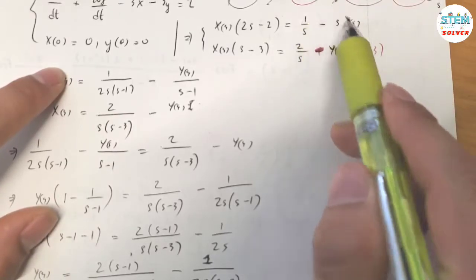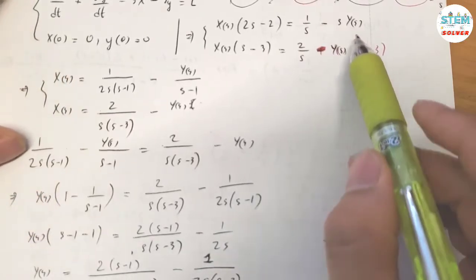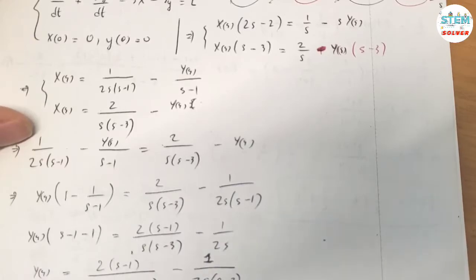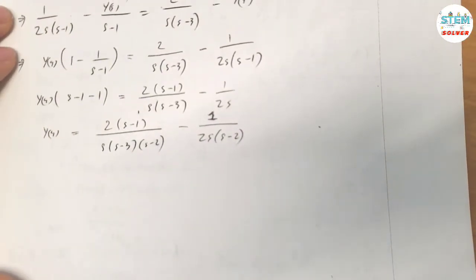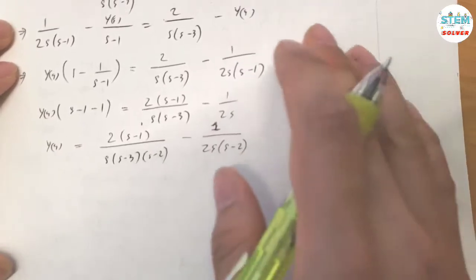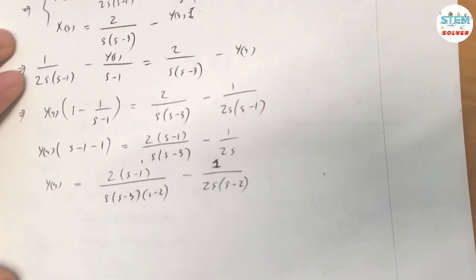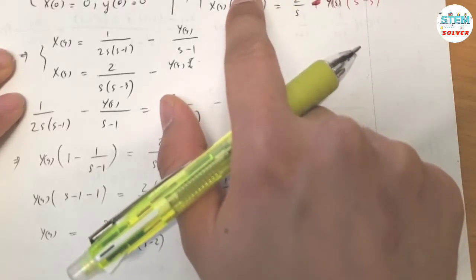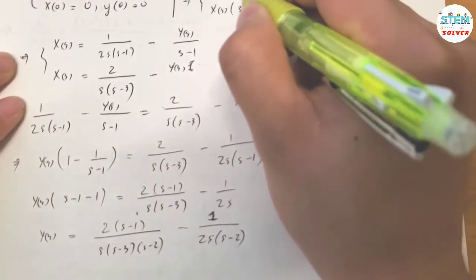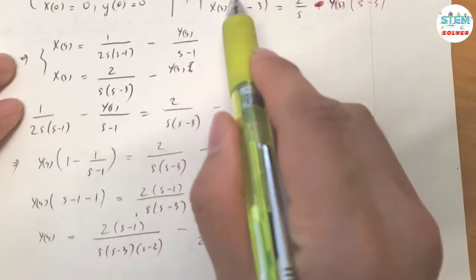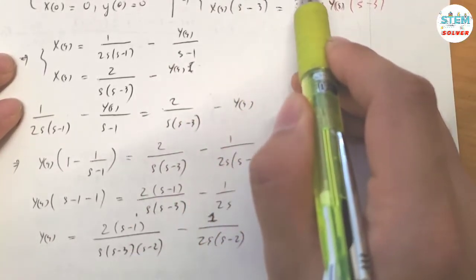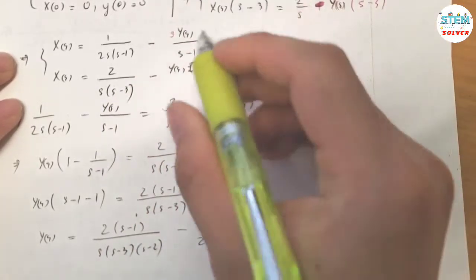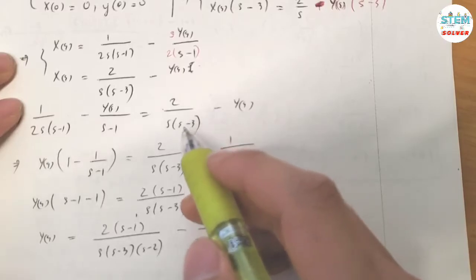Factor out capital Y(S) with (S minus 3). Also, I realized I made another mistake up here when factoring out the two: the denominator is 2 times (S minus 1). So divide both sides by 2(S minus 1), giving one over 2S(S minus 1) minus S·Y(S) over 2(S minus 1).